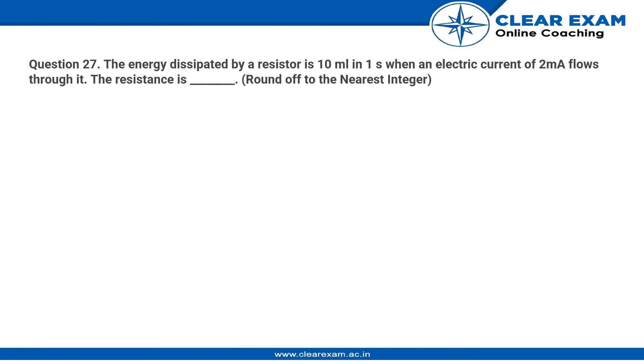Hi guys, here is another question. The energy dissipated by a resistor is 10 millijoules in one second when an electric current of 2 milliamperes flows through it.